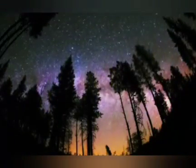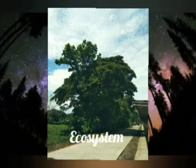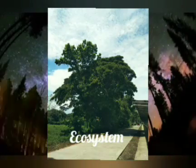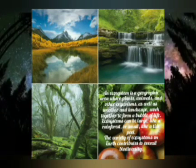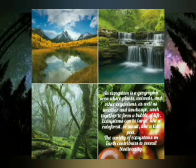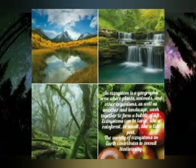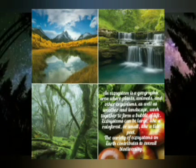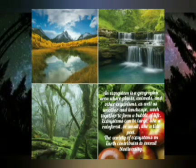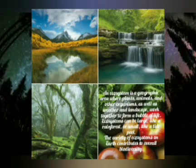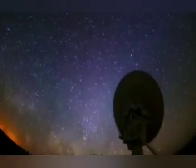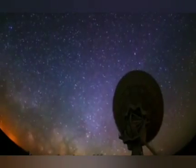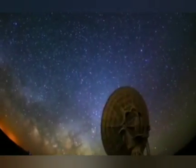The final level of biodiversity is the ecosystem level. An ecosystem is a geographic area where plants, animals, and other organisms interact with each other and their physical environment. This includes factors like weather, landscape, and geology. The variety of ecosystems on Earth ranges from lush forests to small and self-contained environments like a tide pool.